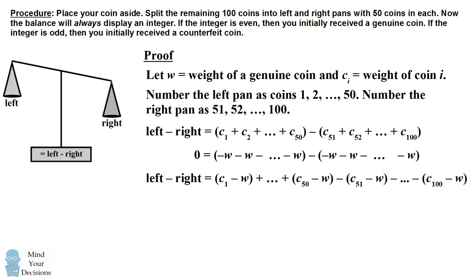Now we know something about each of these terms. For a genuine coin, its weight is exactly equal to the weight of a genuine coin, so each of these terms will equal 0 and they'll vanish.